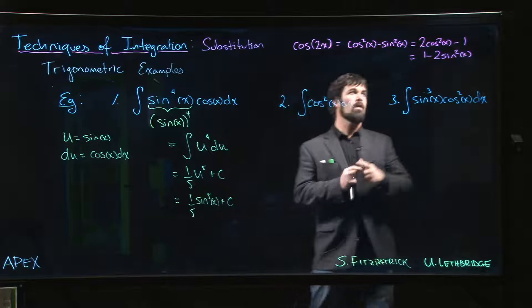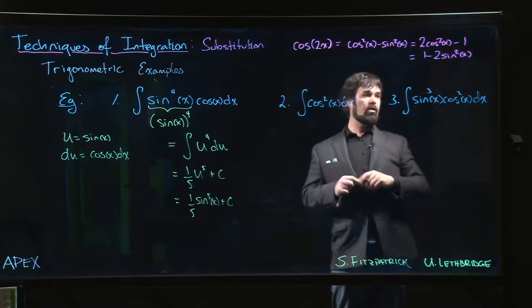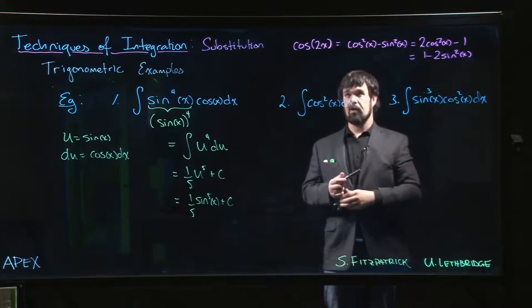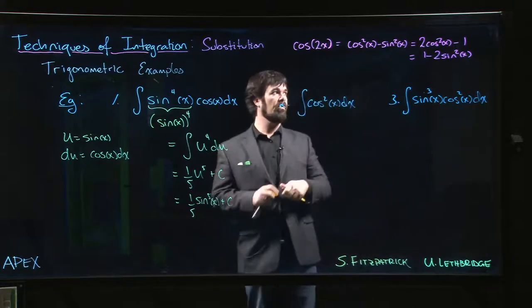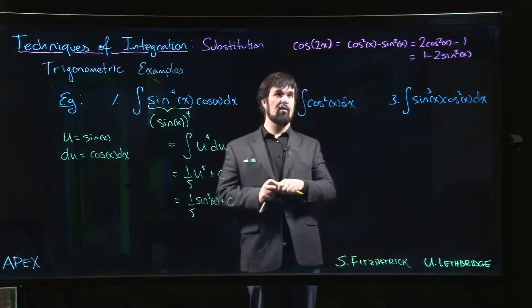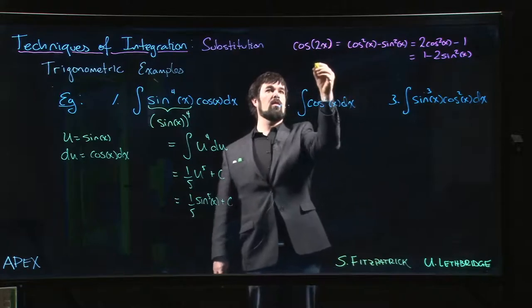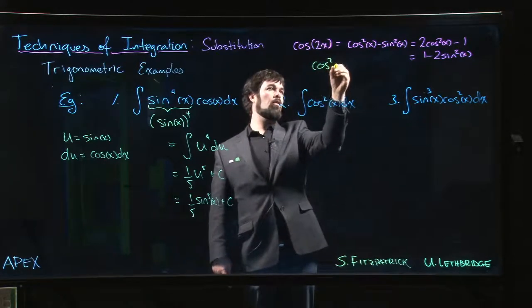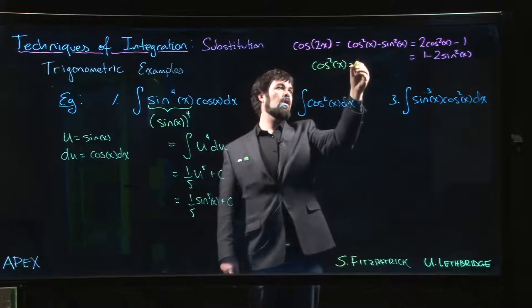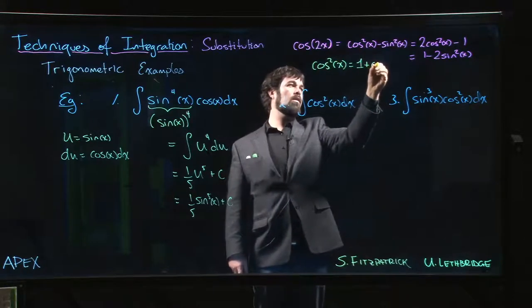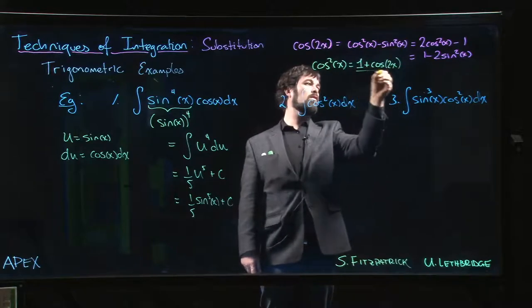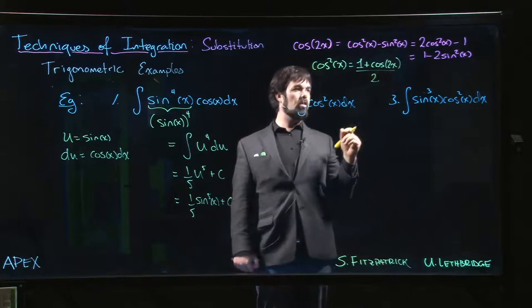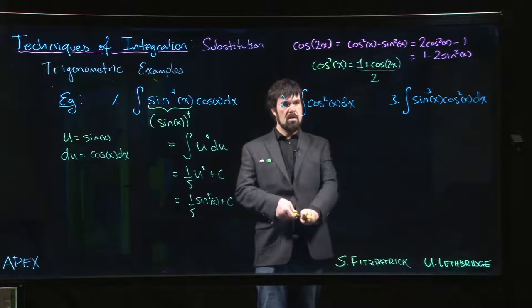The nice thing about this is that you can solve for either cos squared or sine squared if those do happen to turn up in your integral and get rid of that even power. So we get these so-called power reduction formulas. In this case, the one that we want is that cos squared x is 1 plus cosine of 2x divided by 2.